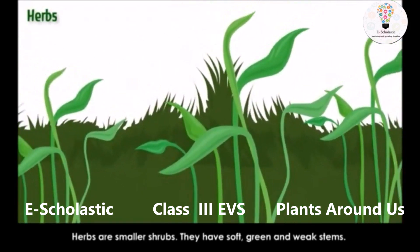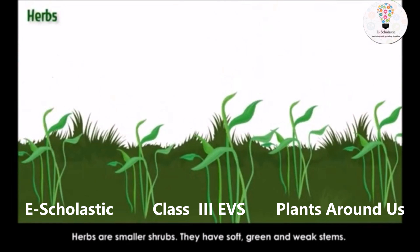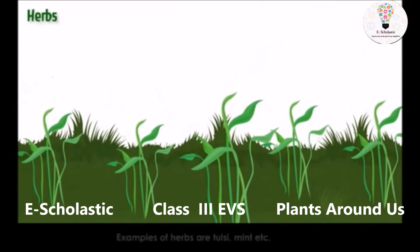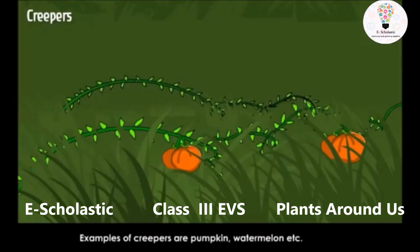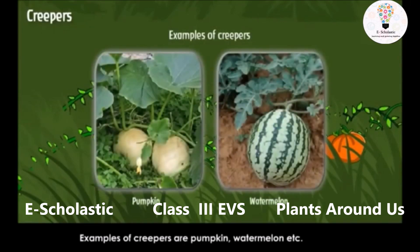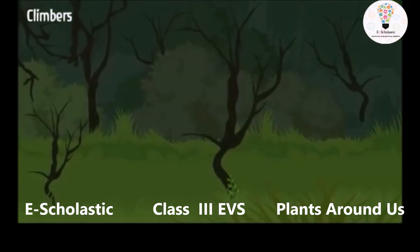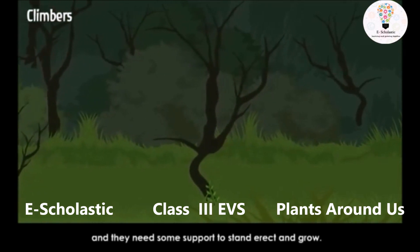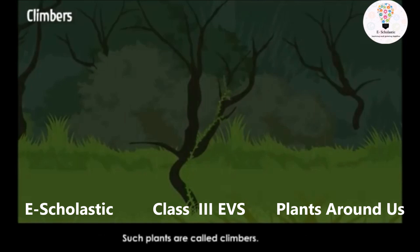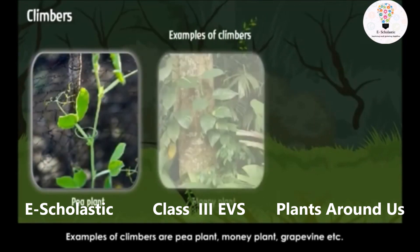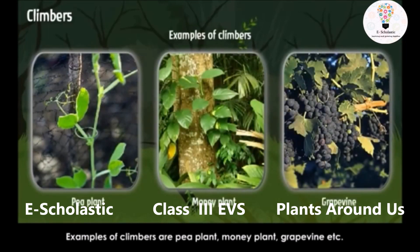Herbs are smaller than shrubs. They have soft, green, and weak stems. Examples of herbs are tulsi, mint, etc. Creepers include pumpkin, watermelon, etc. Climbers are plants with weak stems that need some support to stand erect and grow. Such plants are called climbers. Examples of climbers are pea plant, money plant, grapevine, etc.